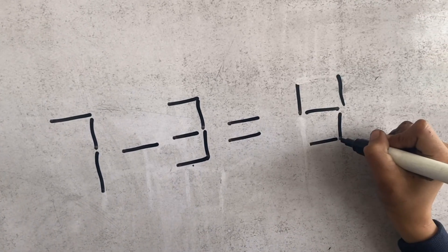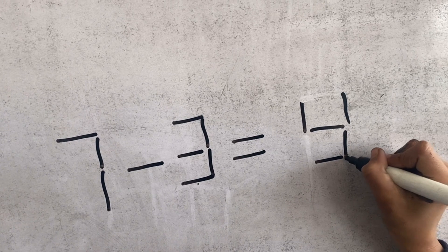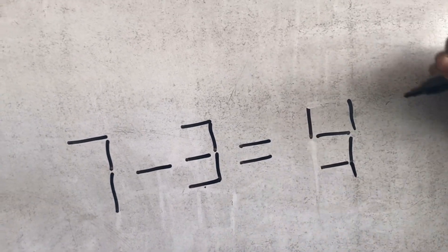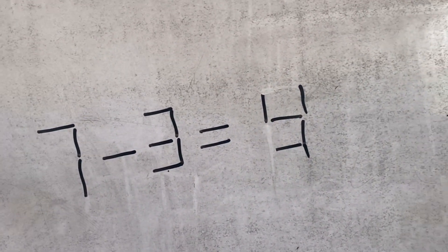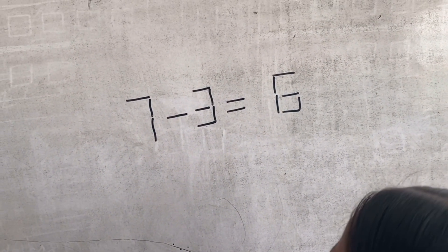Fast. Put anywhere. Put, put, put, put. What is this? What number is this? 7 minus 3 is what? What is this? Try. 7 minus 3 is equal to 6.